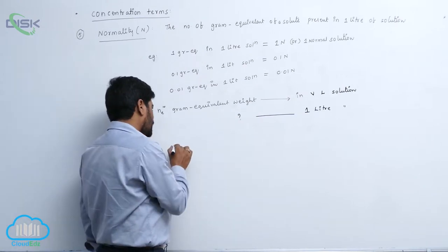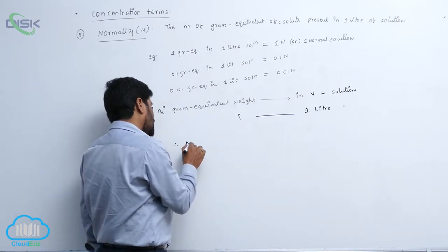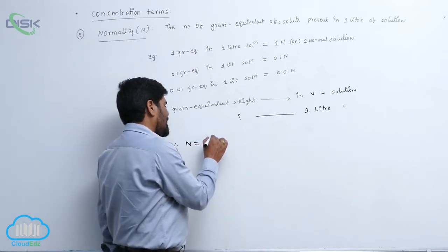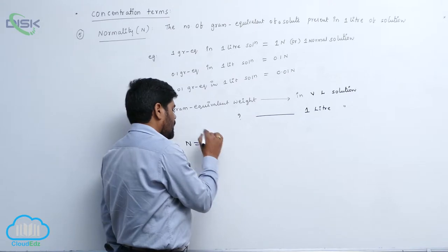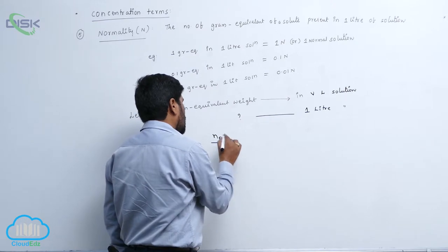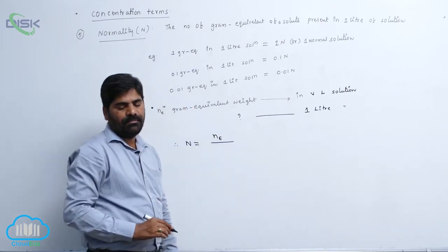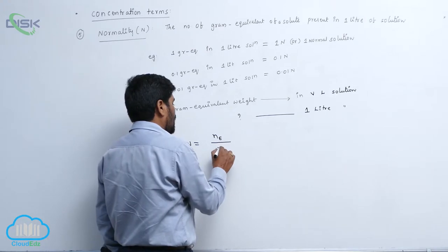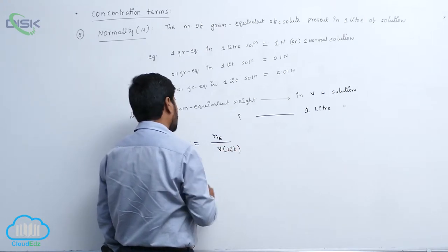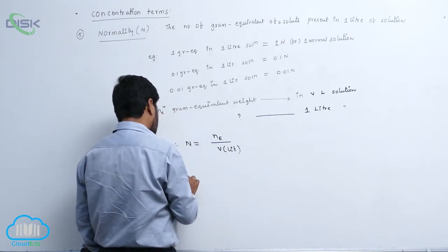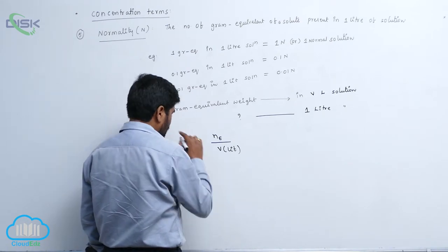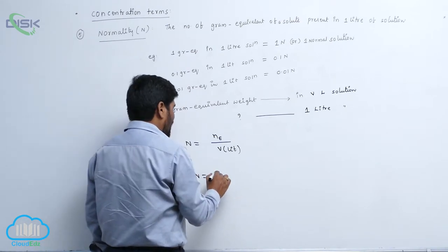So therefore, normality equals to Ne, means equivalent weight Ne, by which one? V. Ne by which one? V in litre. So therefore N equals to equivalent weight.